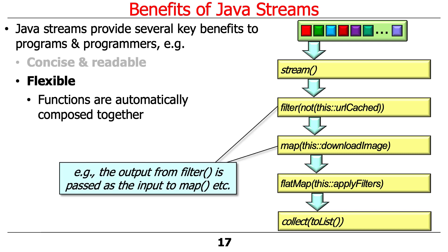Another benefit is flexibility. Aggregate operations are automatically composed together such that the output from one operation becomes the input into the next. For example, the output from filter serves as the input to map, the output of map serves as the input to flatMap, and so on. You can just link these things together like building blocks.